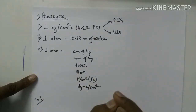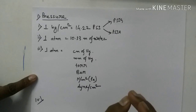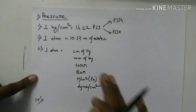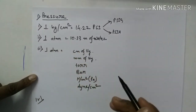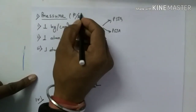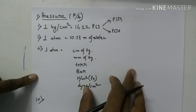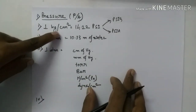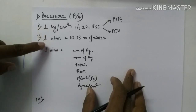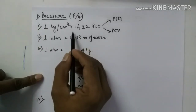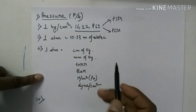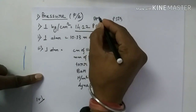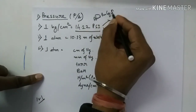The most applicable conversion point in today's industries and examinations is: 1 kg per centimeter square. We know pressure is force per unit area — kg is the force, centimeter square is the area. So 1 kg per centimeter square, if we convert into PSI, equals 14.22 PSI. PSI means pound per square inch.